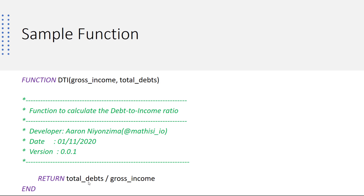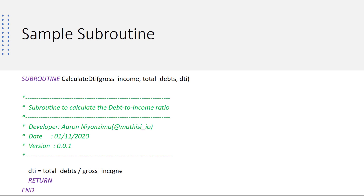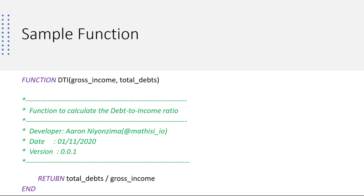The value to be returned is written after the keyword return. So here we are returning DTI as total debts over income, the same way we did in the subroutine. But the difference is that on a subroutine, the return value is not written after return, while in a function, the return value needs to come after the keyword return.